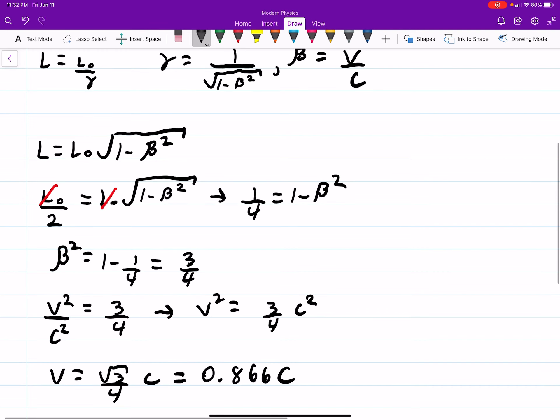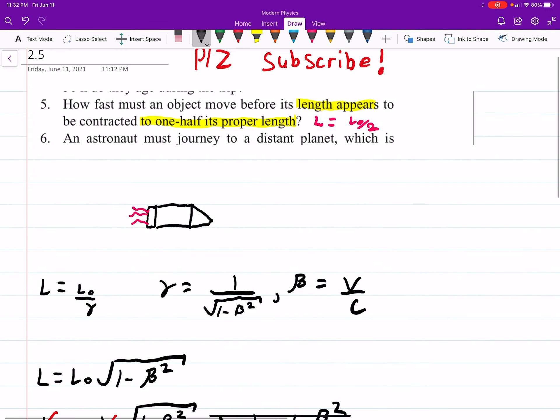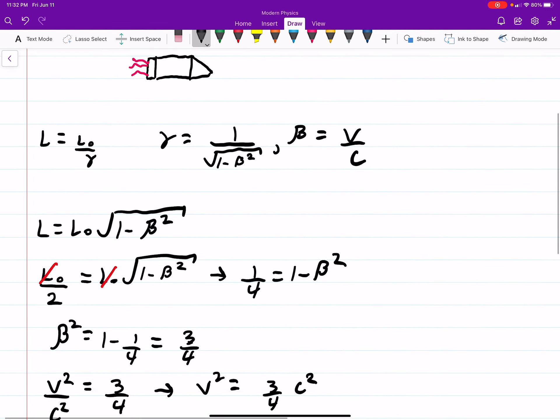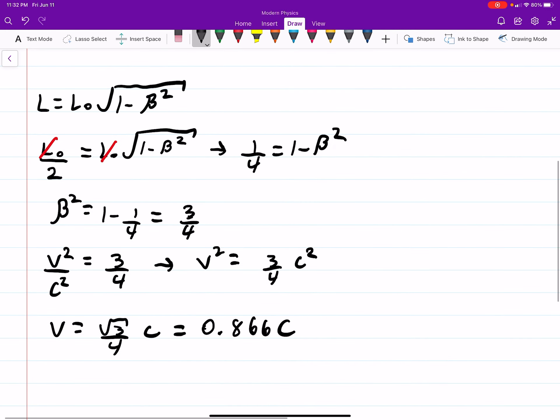So this was a pretty straightforward length contraction problem, as long as you understood the wording, that L is equal to L-naught over 2. After that, it's just an algebra problem.